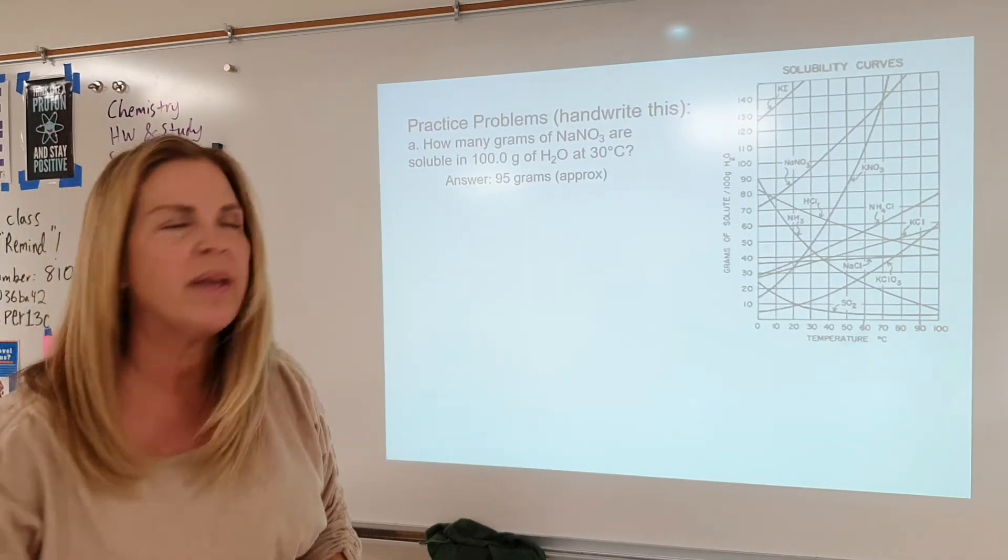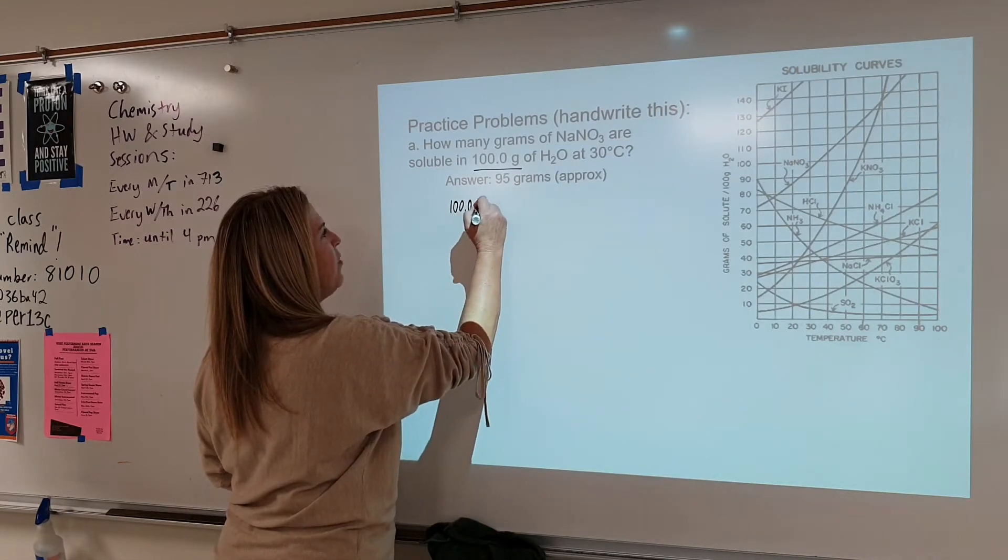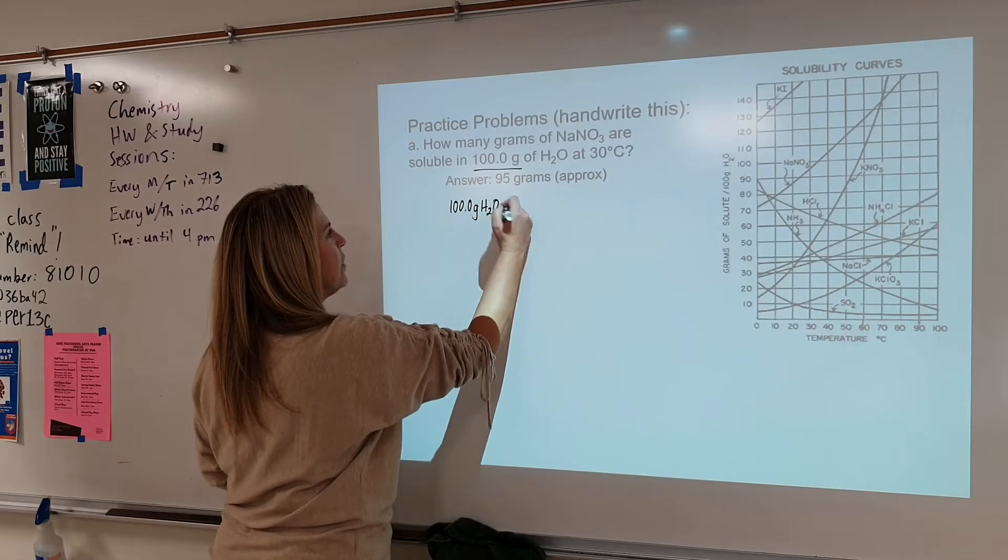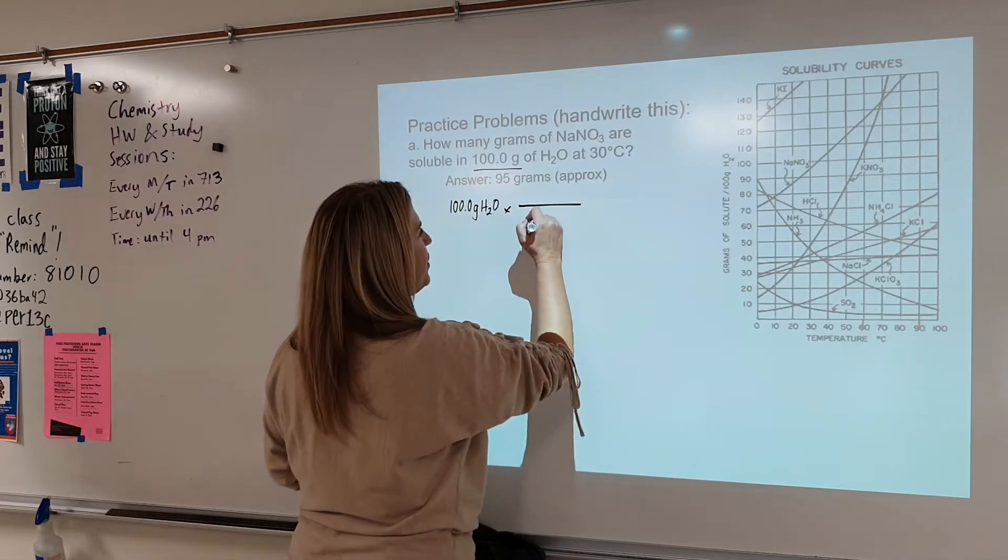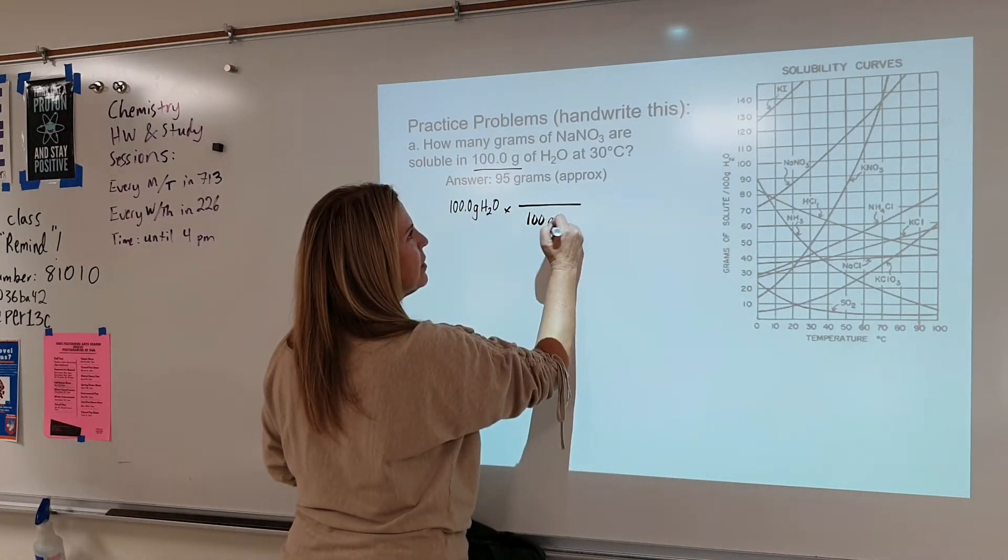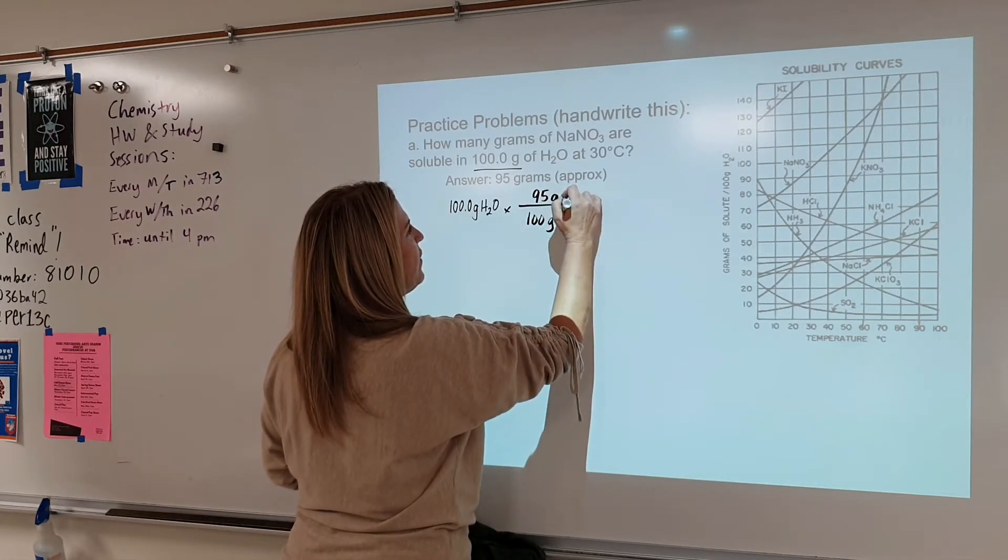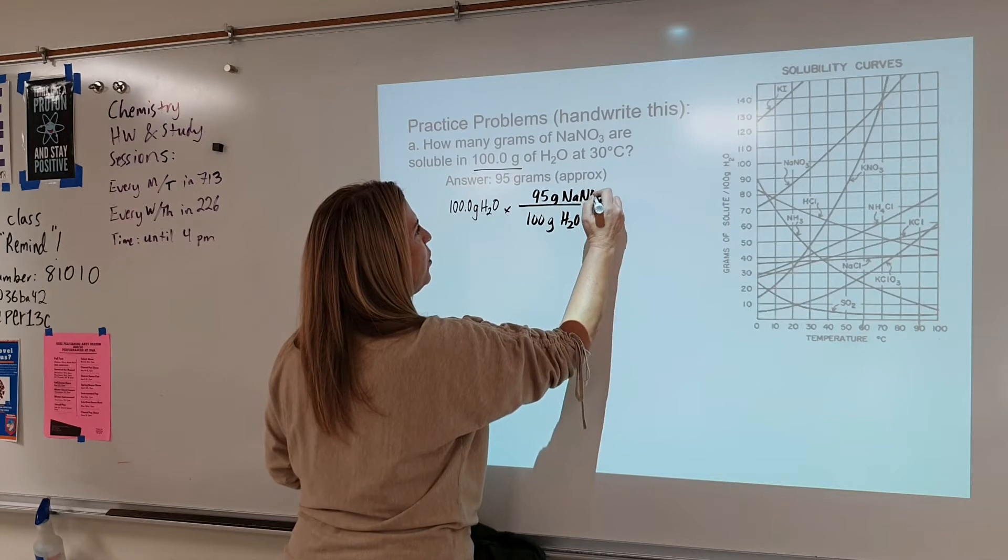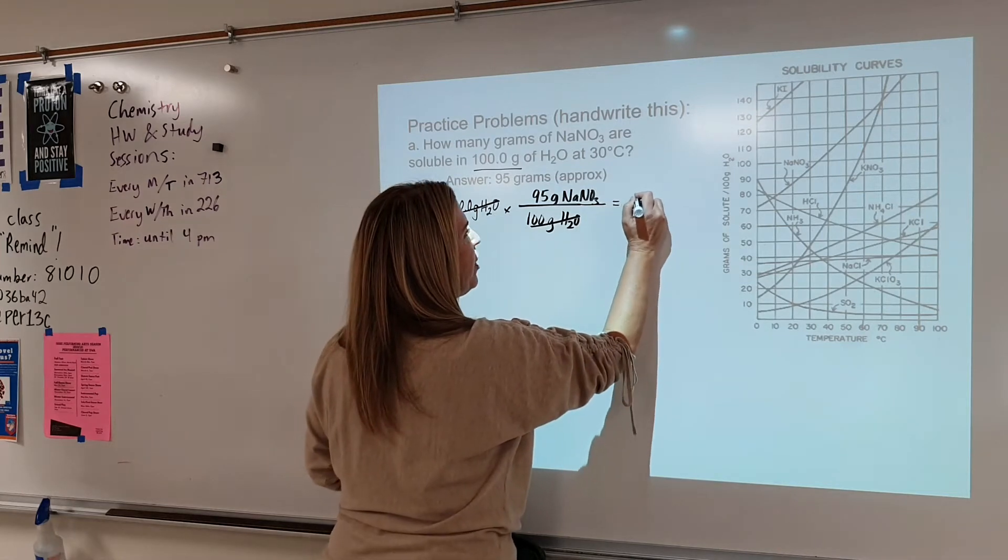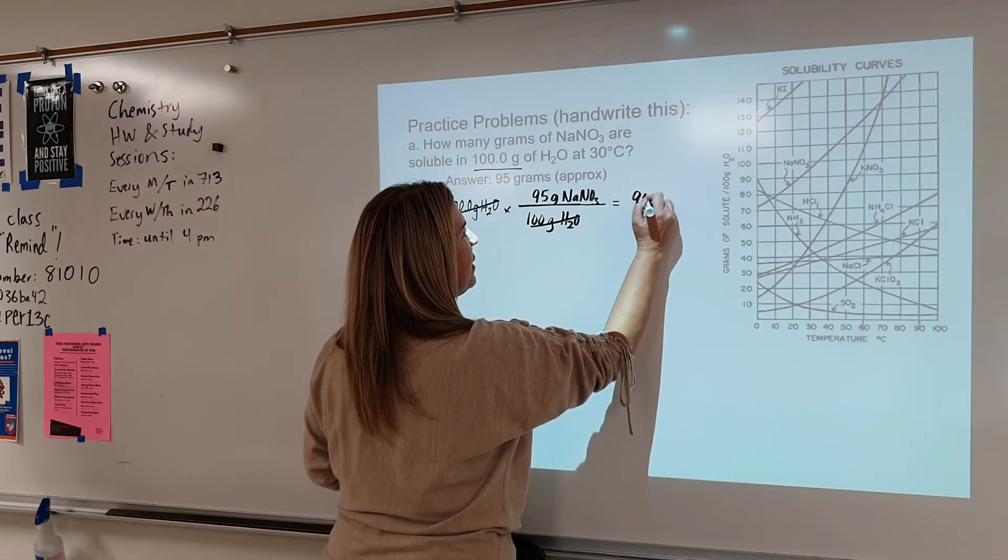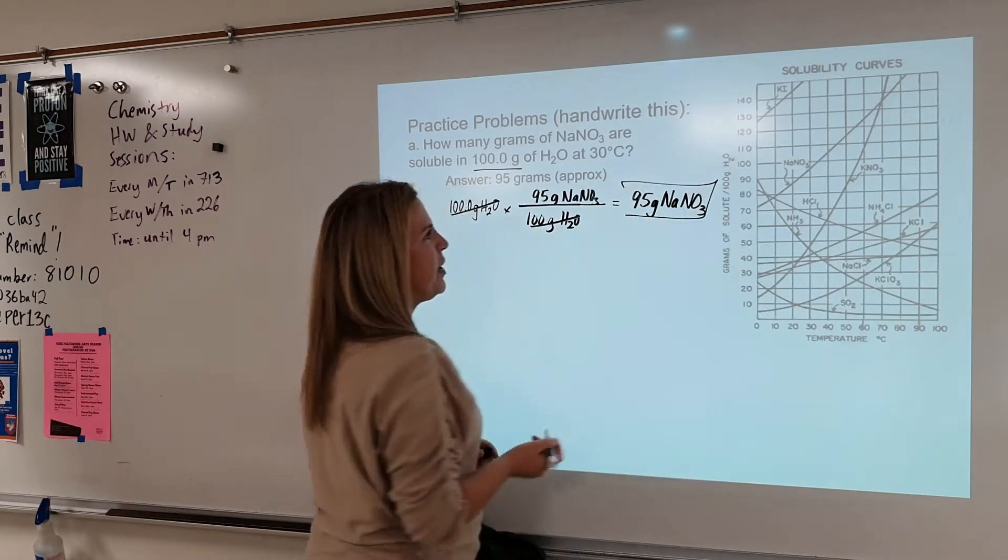But let me show you how we expect the work to look. We were given 100 grams of H2O. And now the graph says that for every 100 grams of H2O, we would have about 95 grams of NaNO3. So doing this, our 100 grams of water is going to cancel. And our answer is going to be 95 grams of NaNO3. And we're going to box that out.